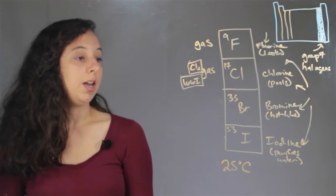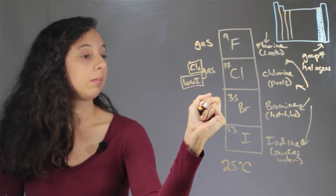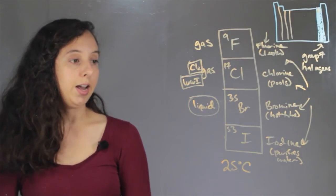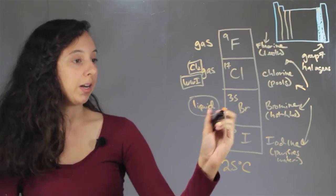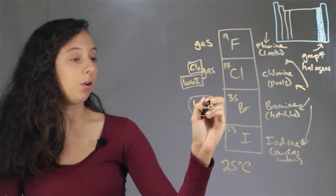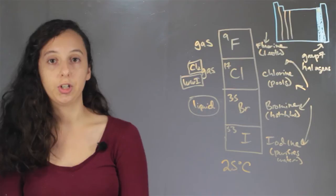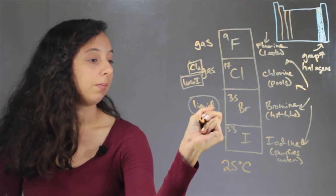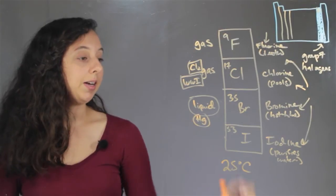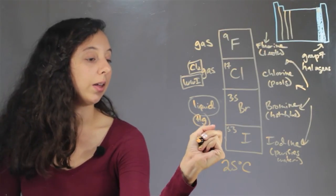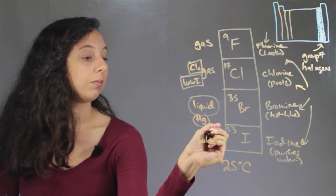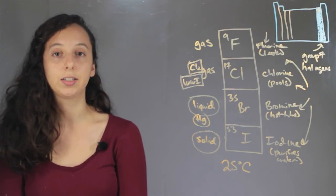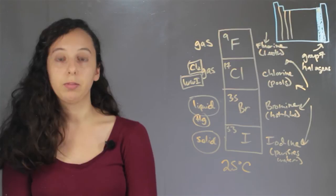Bromine is a liquid at room temperature. Fun fact: bromine is one of only two elements which is a liquid at room temperature — bromine and mercury, Hg, is the other one. Now, iodine is the heaviest and this one is a solid at room temperature. So you can see it starts to increase — as the heavier and heavier an atom gets, the more likely it's going to be a solid at room temperature.